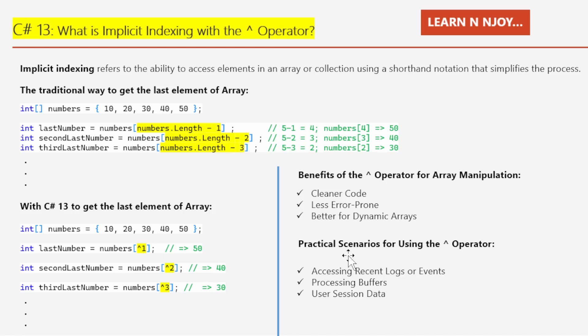Let's go over a few scenarios where the caret operator could make our code more efficient. Number one: accessing recent logs or events — when working with a log of recent events, the caret operator makes code cleaner and faster to write. Number two: processing a data buffer — when handling a data buffer and needing recent data from the end, the caret operator saves time and improves readability. Number three: user session data — when tracking user session data, we can access the most recent session without calculating indices manually. In each of these cases, the caret operator allows quick access to the last few items without worrying about the exact length of the array.